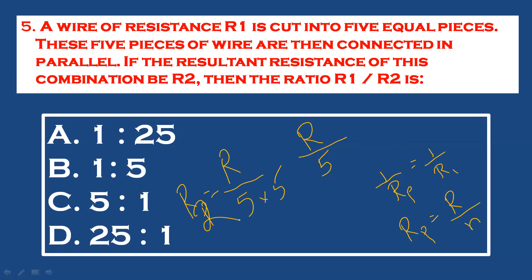then the ratio R1 to R2 is: R1 = R and R2 = R/25, so R1/R2 = 25. The ratio is 25.